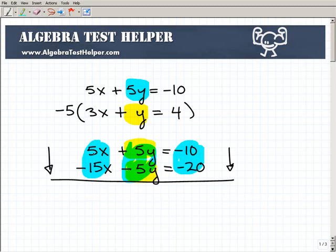We're going to get 5x plus a negative 15x gives me negative 10x. Just be careful with these positive negative numbers. 5y plus a negative 5y gives me 0. Guess what? They have been eliminated. So they're gone. So negative 10x is equal to negative 10 plus negative 20. That's negative 30. Now check out what you're left with. You have negative 10x equals negative 30. That's a super easy equation to solve.